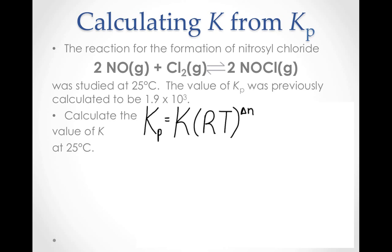For example, the reaction for the formation of nitrosyl chloride had previously been determined to have an equilibrium constant Kp with a value of 1.9 times 10 to the third power. Can you calculate the value of the equilibrium constant K, which relates to the molar concentrations of reactants and products?